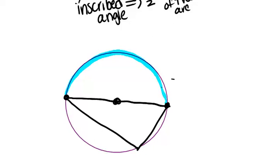Because a semicircle is 180 degrees, it means that this inscribed angle has to be a right angle. So, in general, inscribed angles of semicircles are always right angles.